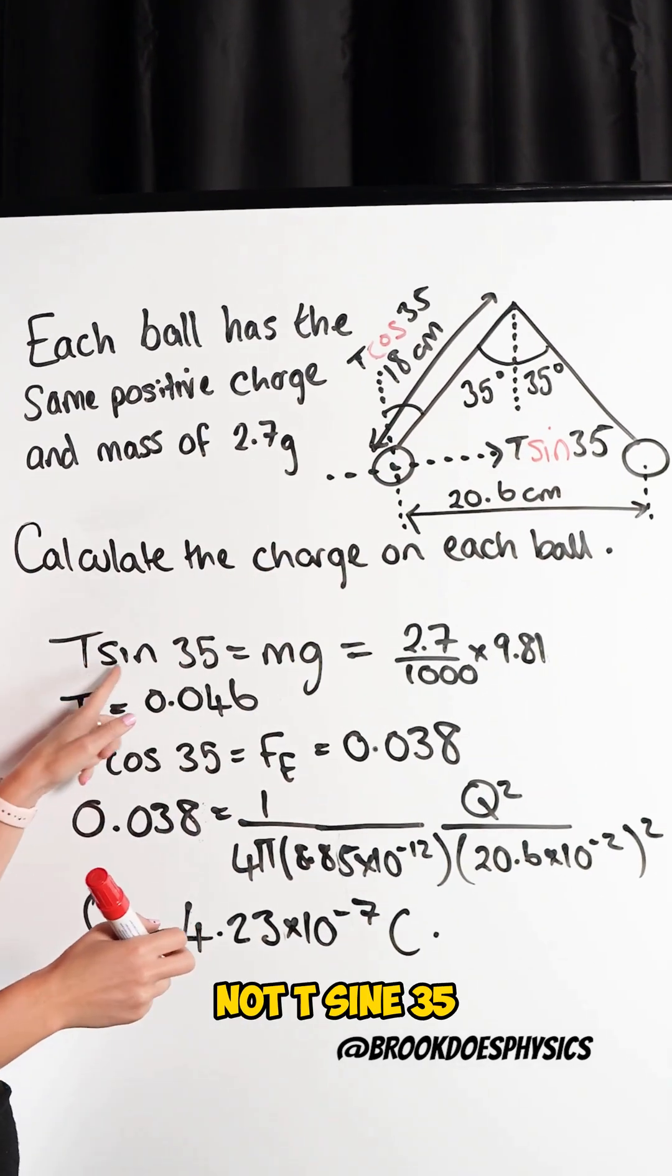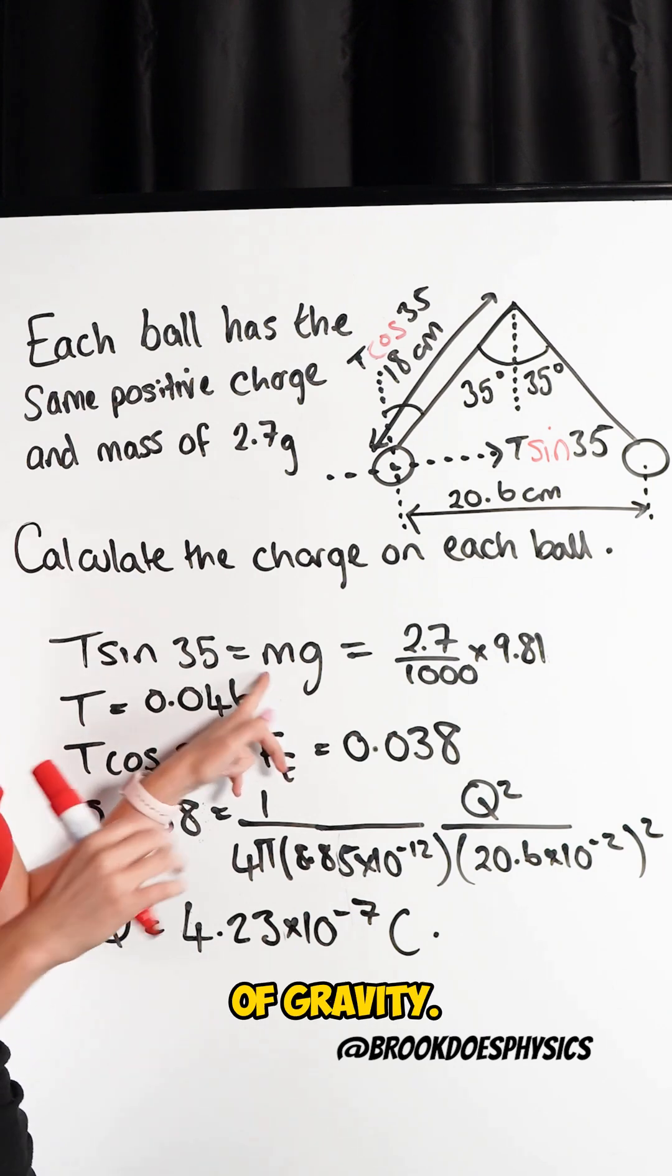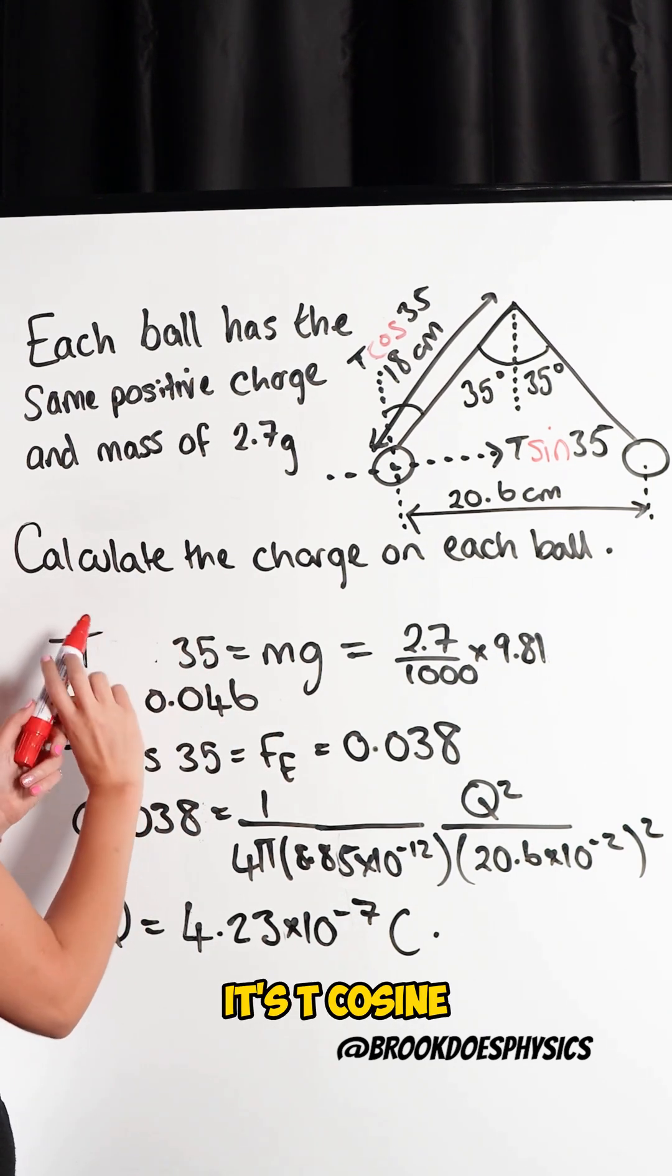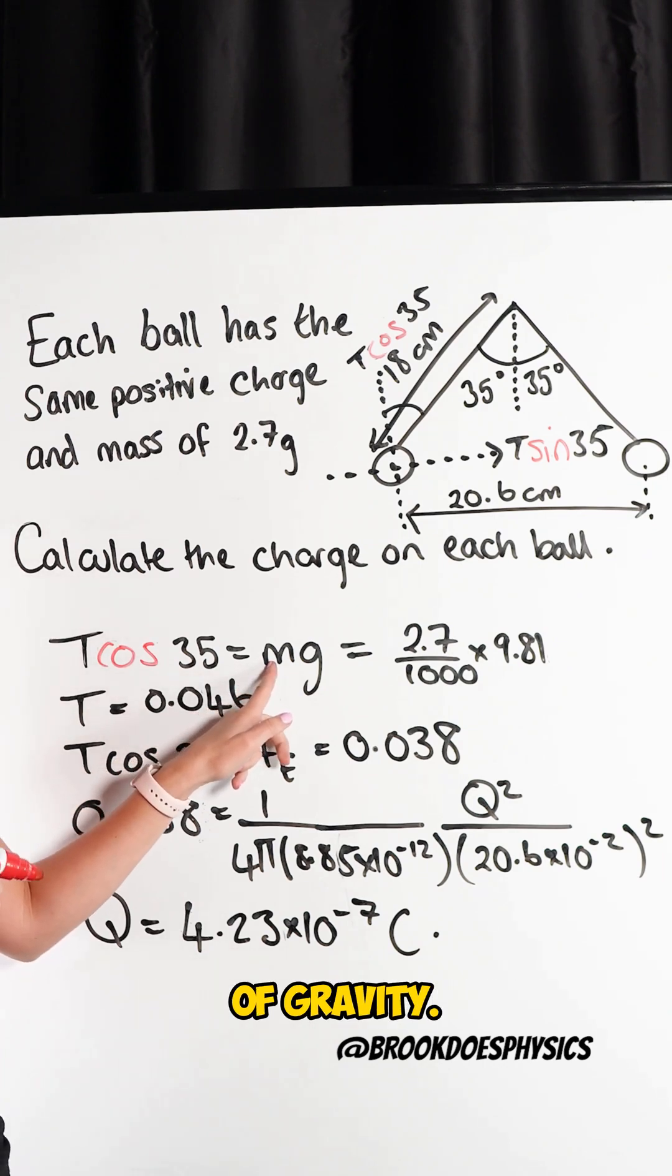So then here that's not T sine 35 is equal to the downward force of gravity. It's T cosine of 35 is equal to that downward force of gravity.